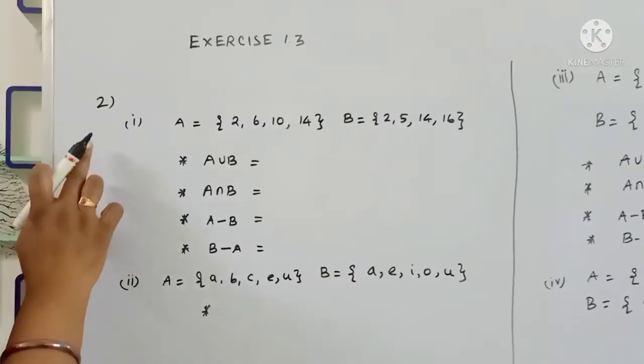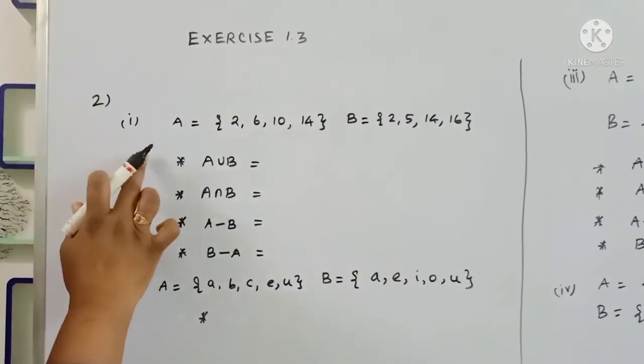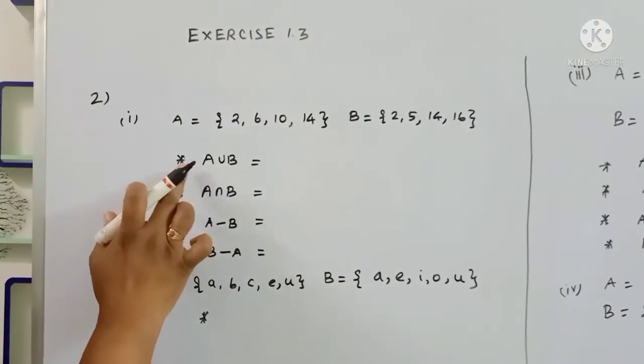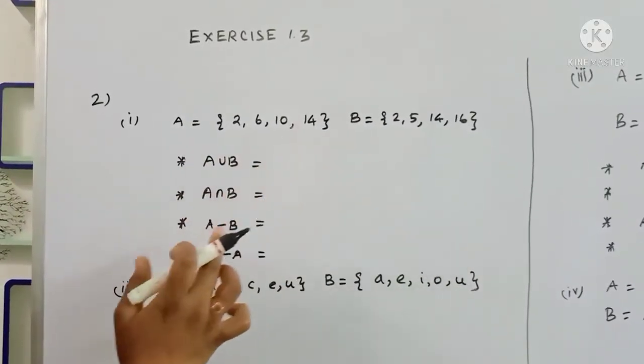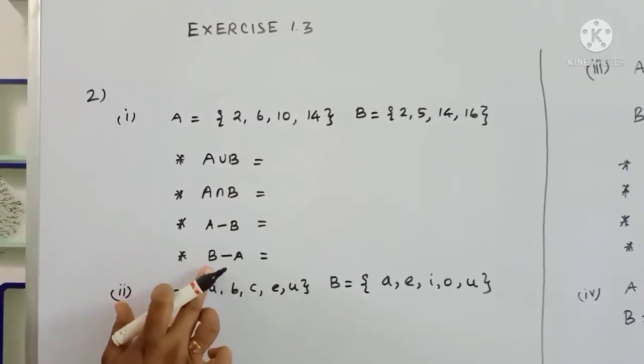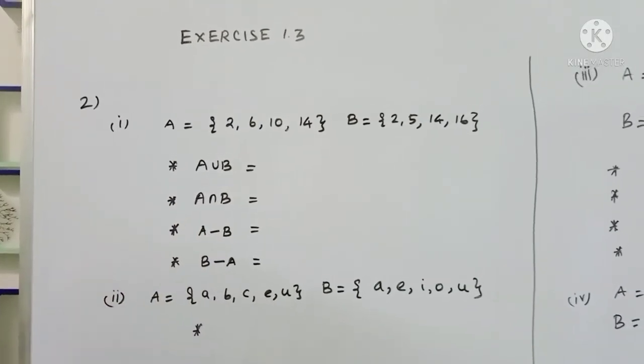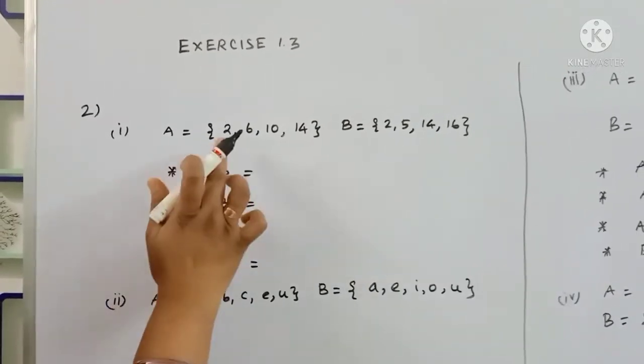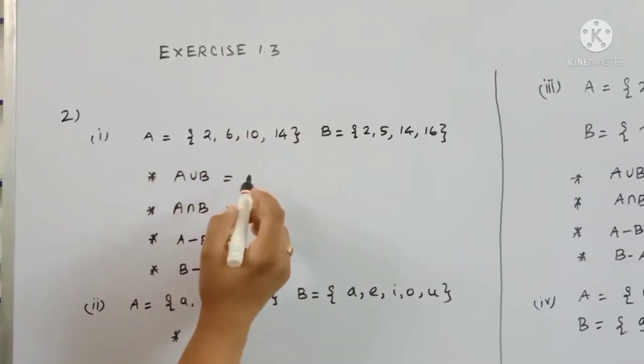The second sum has sets A and B. We need to find A union B, A intersection B, A minus B, and B minus A.